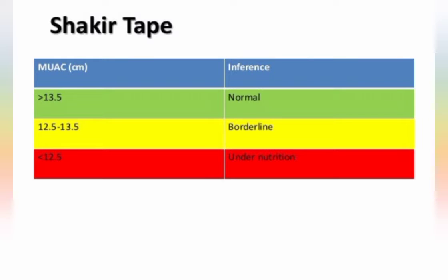Now let us know about the different interpretations of malnourishment. If the mid upper arm circumference of a person is greater than 13.5 centimeters, the person is normal. If the measurement is 12.5 to 13.5 centimeters, the person has moderate malnourishment. If the measurement is less than 12.5 centimeters, the person is under nutrition or in severe malnourishment.